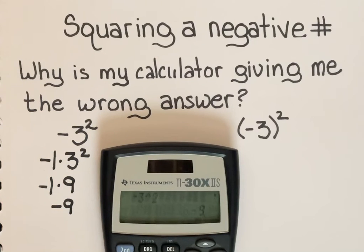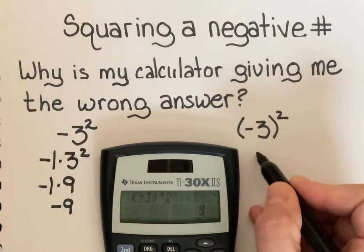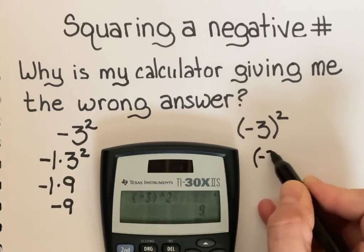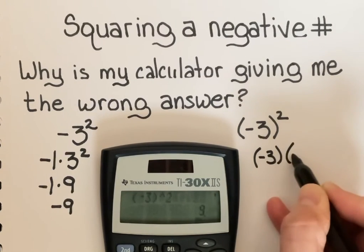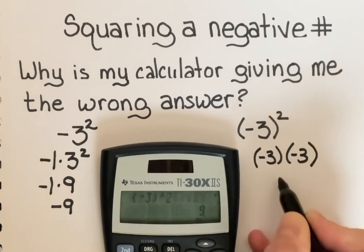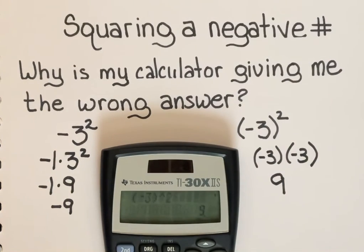If you want to multiply negative 3 times negative 3, you must put the negative 3 inside a parentheses. So notice if I put parentheses negative 3 to the second power, my calculator will give me positive 9 because the calculator is multiplying negative 3 times negative 3 and getting positive 9.